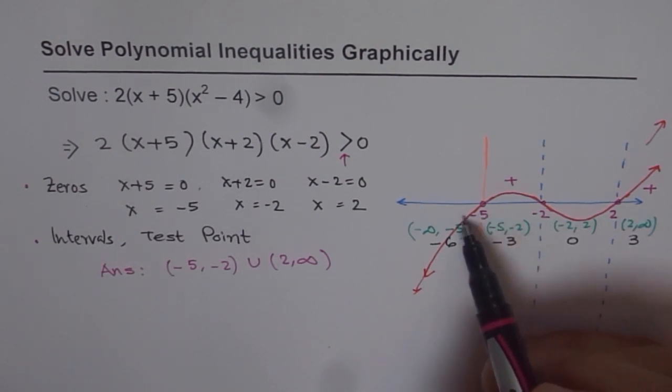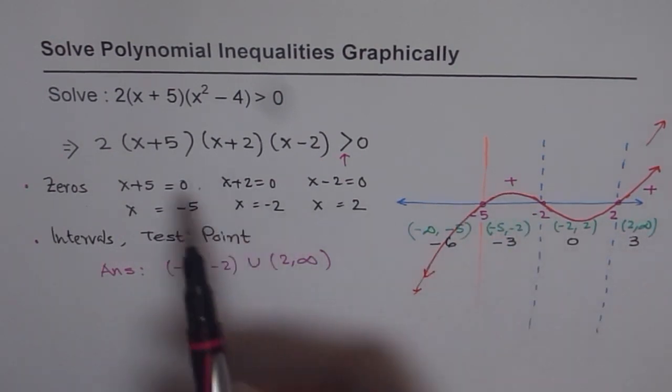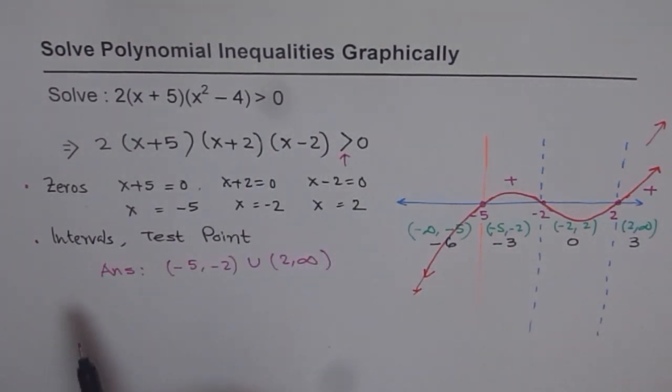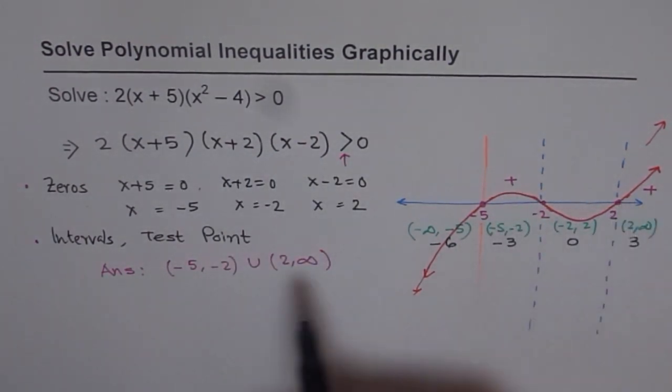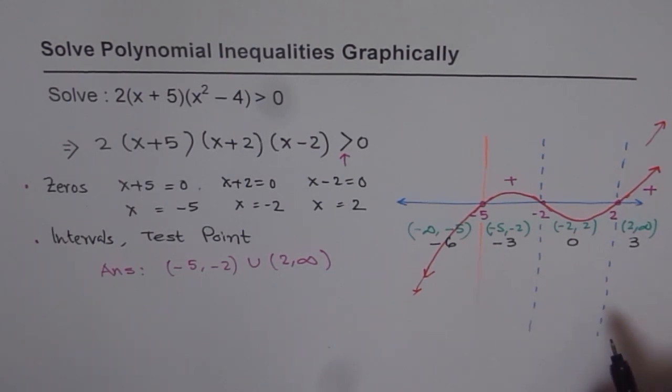So you have to look for that change. Either it is positive or negative. So once you find that out, you know during which interval your polynomial is greater than 0. Mark those and write them in answer. So it is as simple as that.